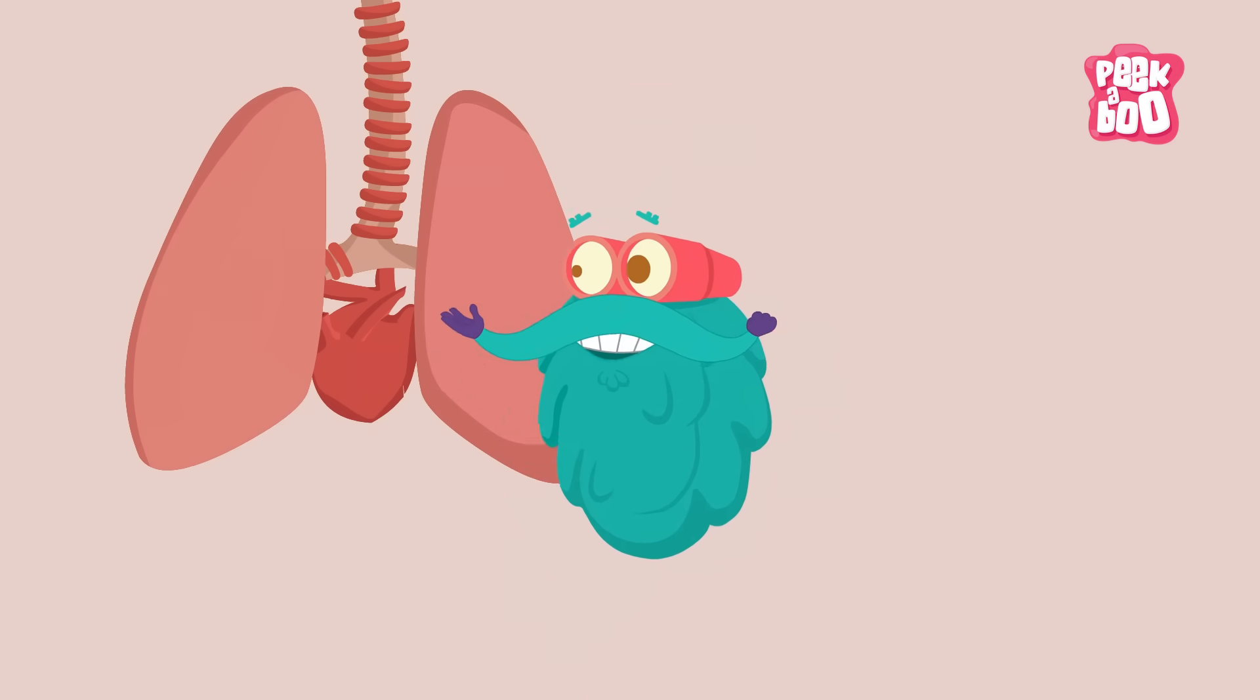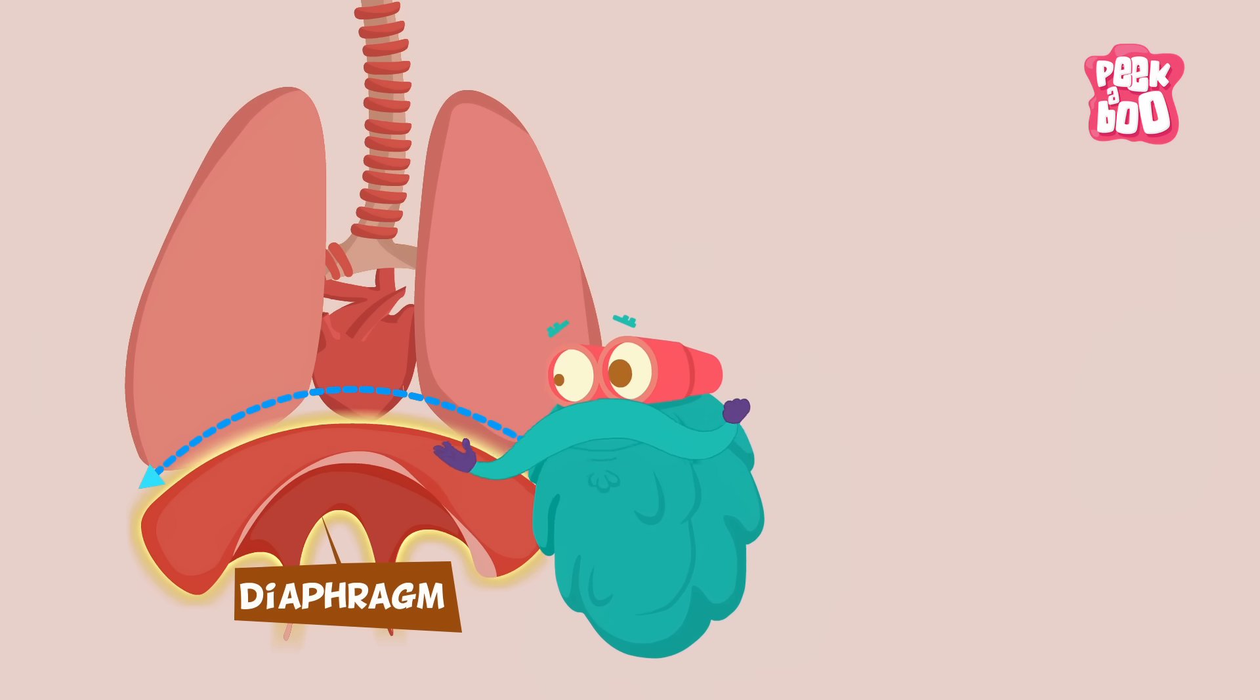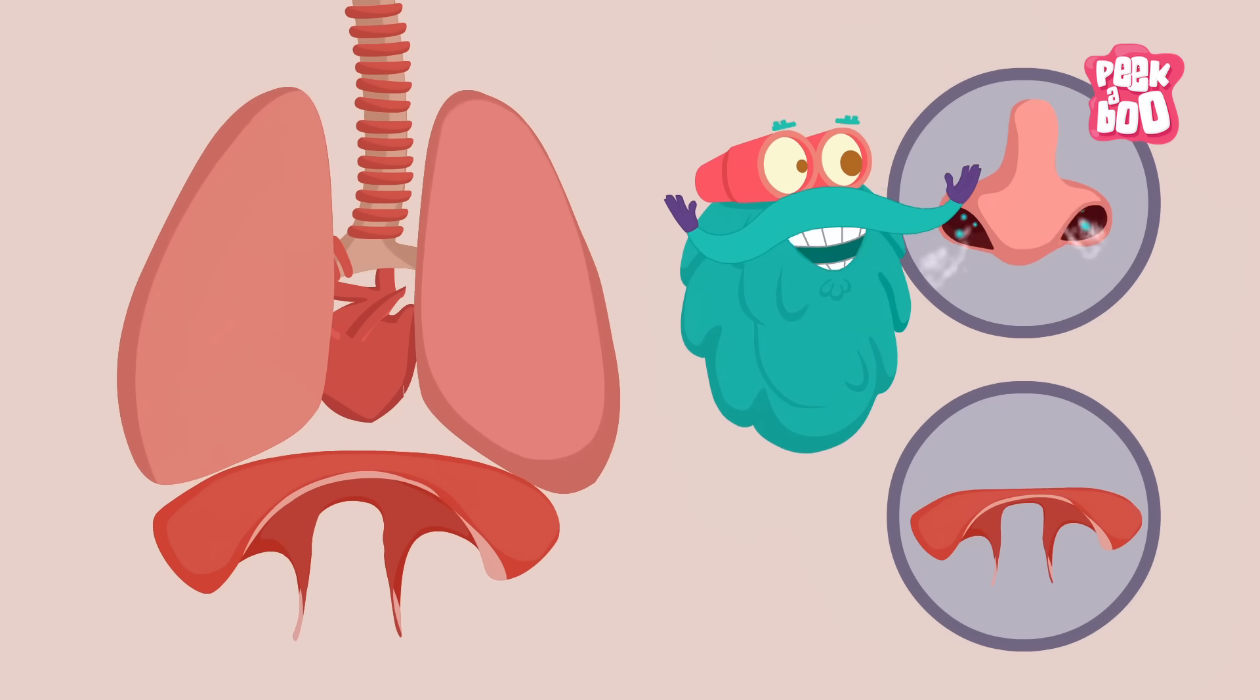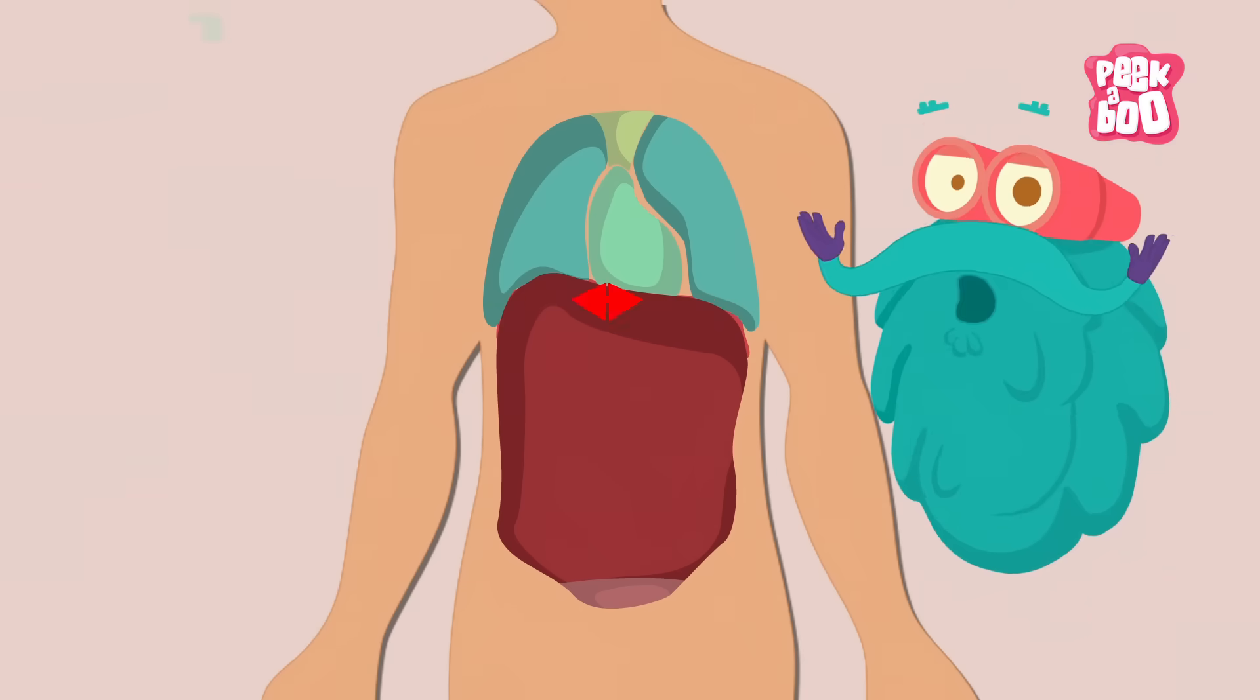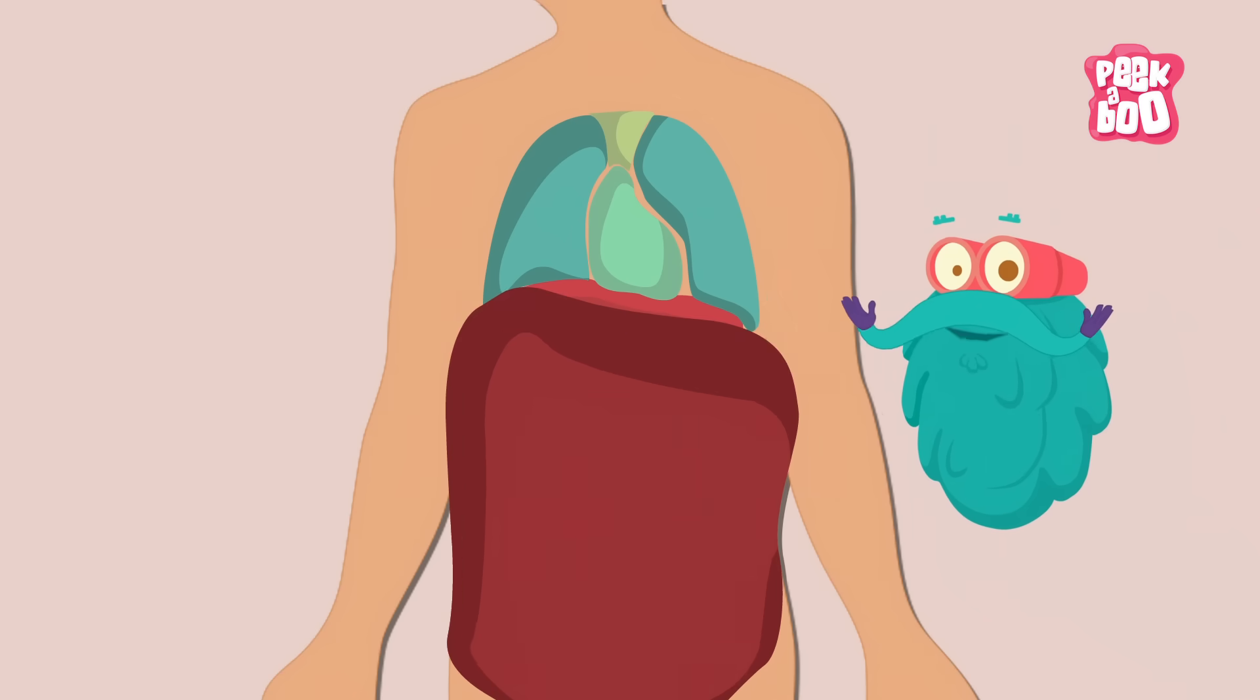Just beneath the lungs, there is a dome-shaped muscle called diaphragm that contracts when you breathe in and expands when you breathe out. It also separates the chest cavity from the abdominal cavity.